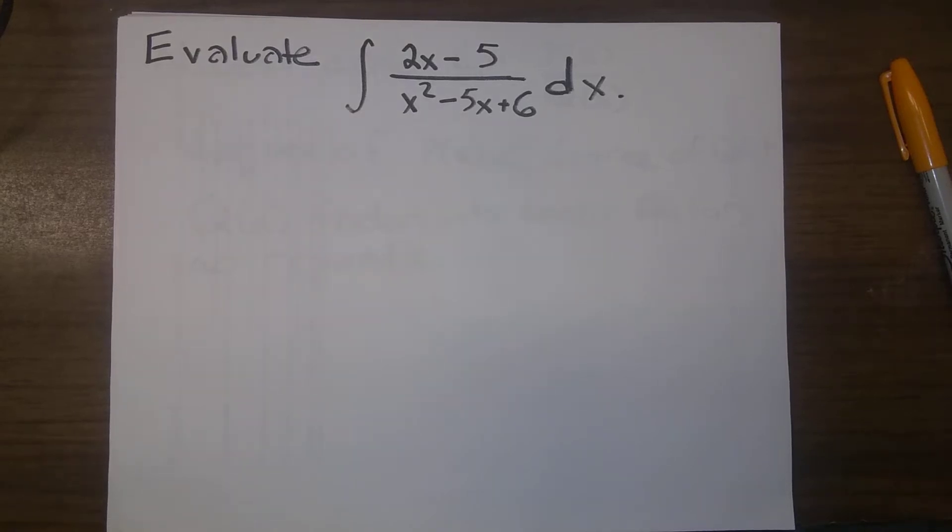Here's our first example for actually working through partial fractions from scratch. So we want to evaluate the integral of 2x minus 5 over x squared minus 5x plus 6 with respect to x.